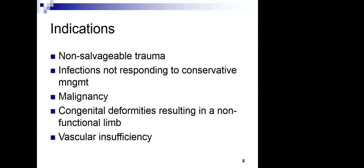Congenital deformities resulting in a non-functional limb are also an indication, though this is becoming rare with prenatal scanning. Prenatal scans can identify improper limb bud development, and in many cases parents choose to terminate the pregnancy. In cases where they choose not to, or where it was missed due to inadequate prenatal scanning and the pregnancy has progressed beyond the point of termination, congenital deformities may be present.